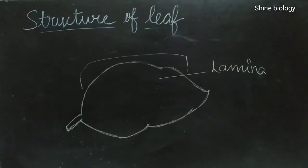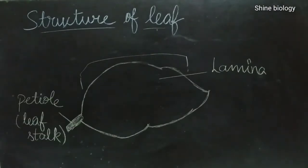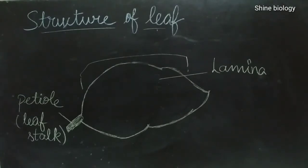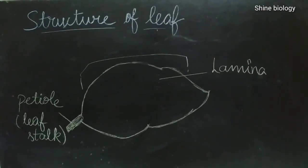The leaf is present on the branches of the plant. In one plant, there are many number of leaves present, which help in photosynthesis for making food, transpiration, and loss of excessive water, etc.